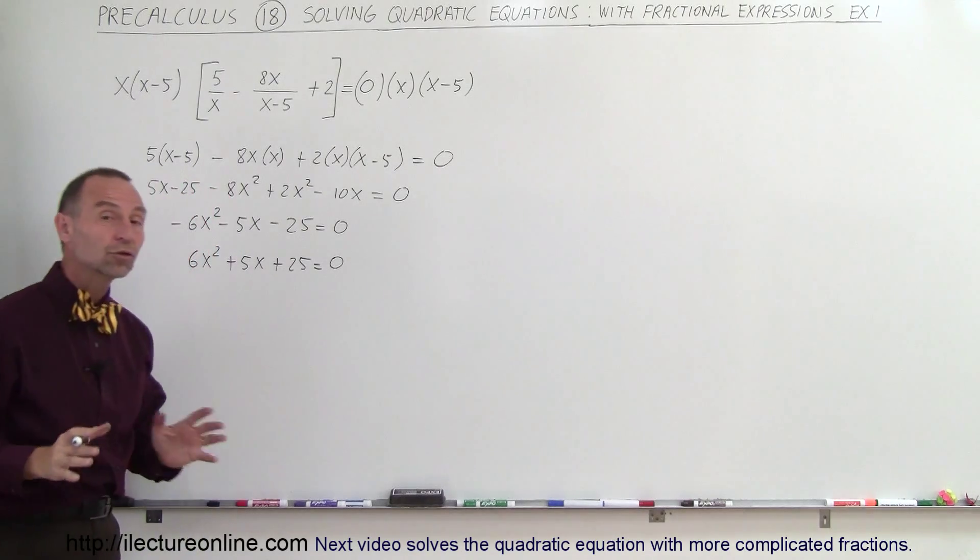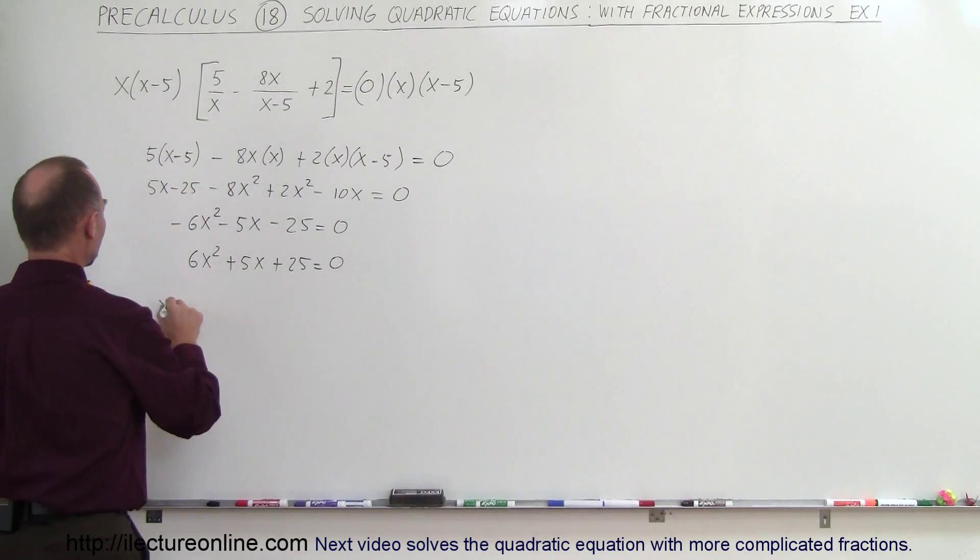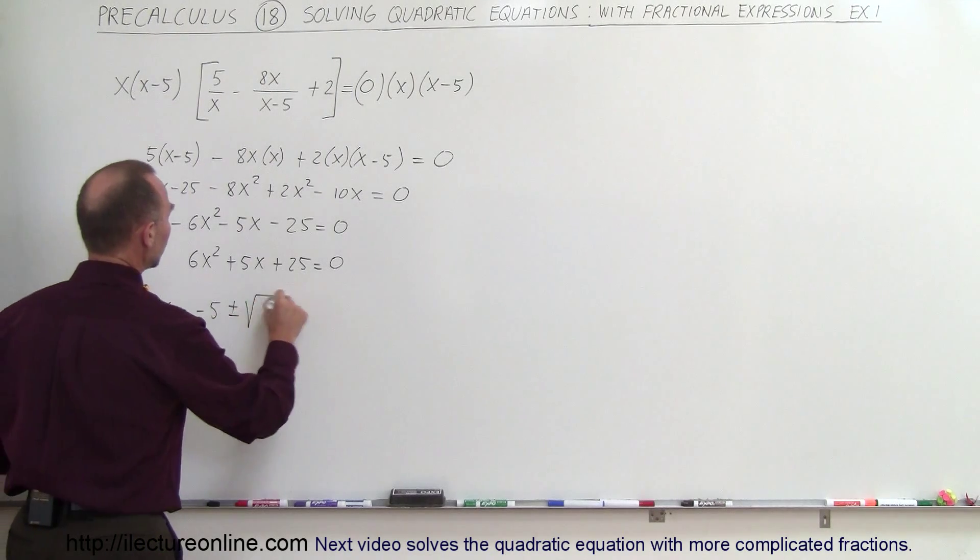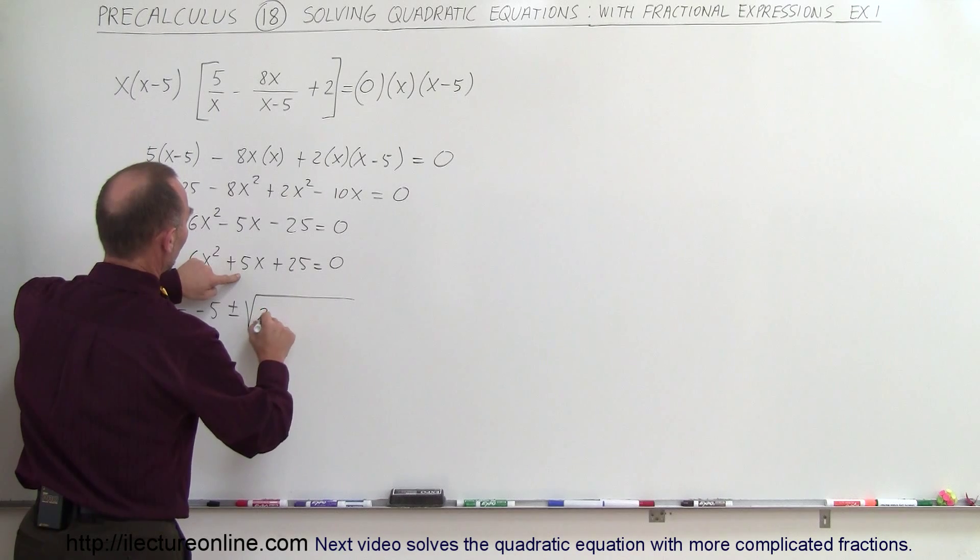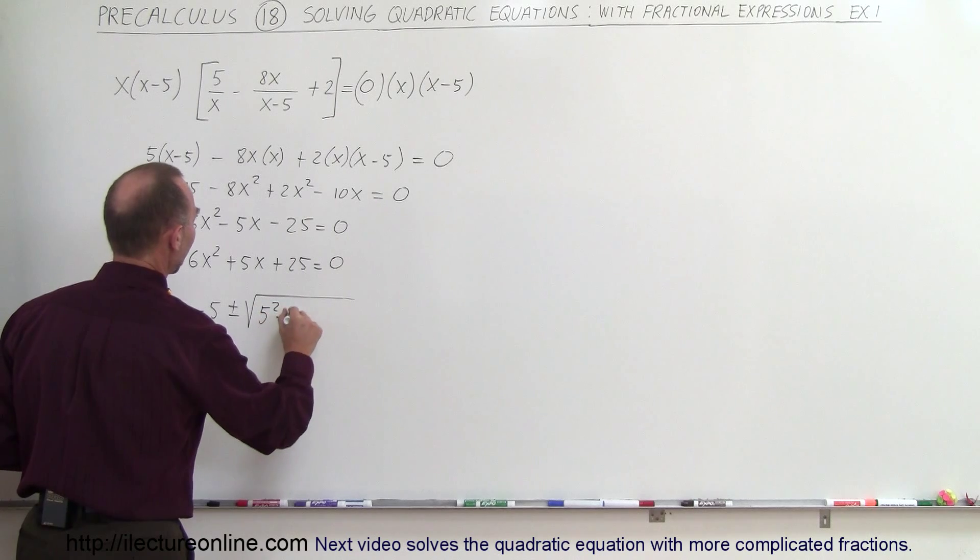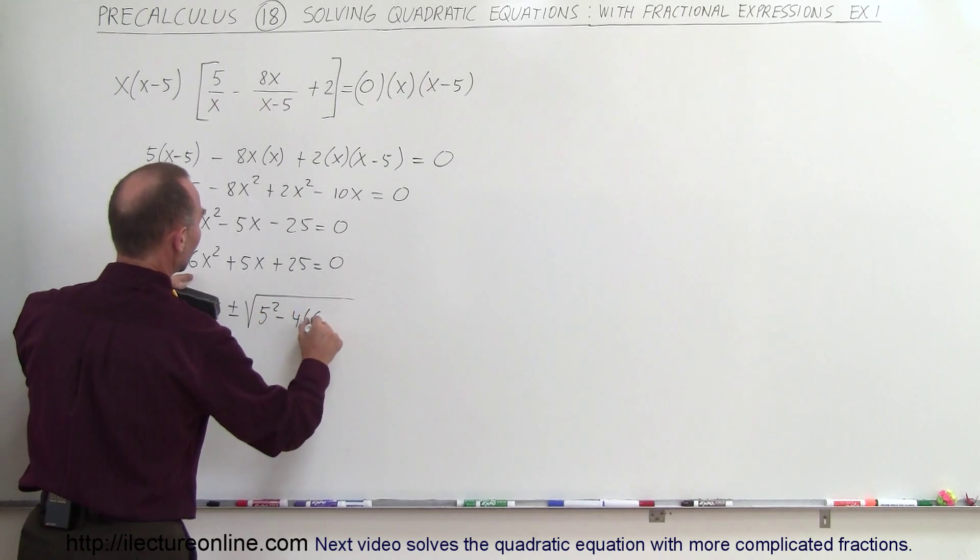So now we're going to use the quadratic formula to solve that. So x is equal to negative 5 plus or minus the square root of b squared, which is 25, or I could just go ahead and write it like this, it's better. So it would be 5 squared minus 4 times a, which is 6.